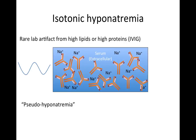Isotonic hyponatremia is not a true hyponatremia — it's actually a lab error. If there is a very high concentration of a non-osmotically active molecule like lipids or proteins, for example IV immunoglobulin, the lab won't correctly measure serum sodium concentration because the photons or pH meter will be thrown off. So even though the actual serum sodium is normal, the lab reads it as hyponatremia.